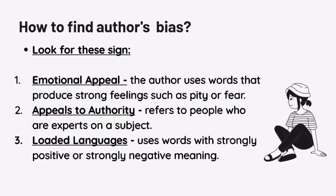How to find the author's bias. Look for these signs. First, emotional appeal: the author uses words that produce strong feelings such as pity or fear. Second, appeals to authority: it refers to people who are experts on a subject. Third, loaded language: uses words with strongly positive or strongly negative meaning.